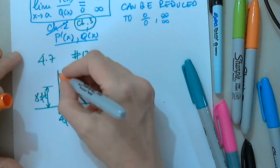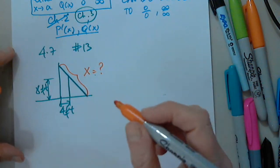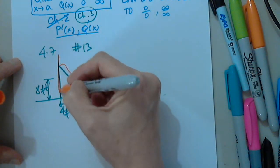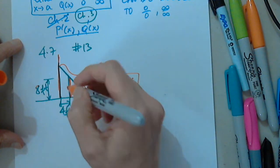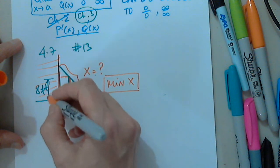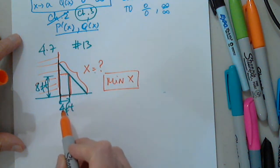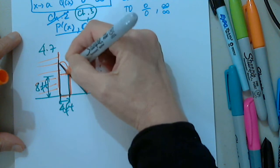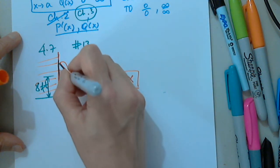So here we have X which is unknown, and we want to determine the minimum X. We have a building here, and a fence that is eight feet tall, running parallel to the building at a four-foot distance from it. We want to know the minimum length of this ladder needed to reach over the fence and touch the wall of the building.